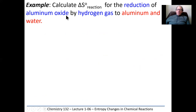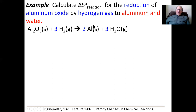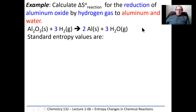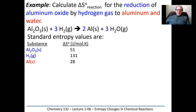We're going to calculate the delta S for the reduction of aluminum oxide by hydrogen gas to aluminum and water. Aluminum has a charge of plus three, oxygen has a charge of minus two, giving us Al₂O₃. It's combining with hydrogen gas — a diatomic molecule — to make aluminum solid and water. We first analyze this equation: we have a solid on the left and a solid on the right, a gas on the left and a gas on the right. We have four moles of reactants and five moles of products.